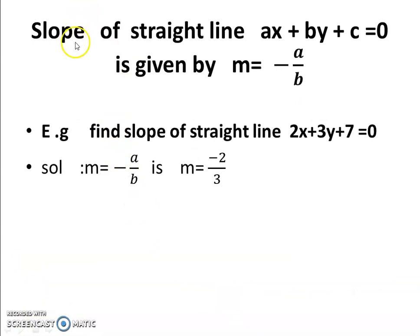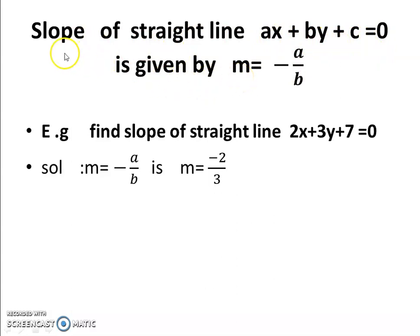Now, the slope of straight line ax plus by plus c equal to 0 is given by small m. The letter m is used for slope. m is equal to minus a upon b — meaning the coefficient of x variable upon the coefficient of y variable.